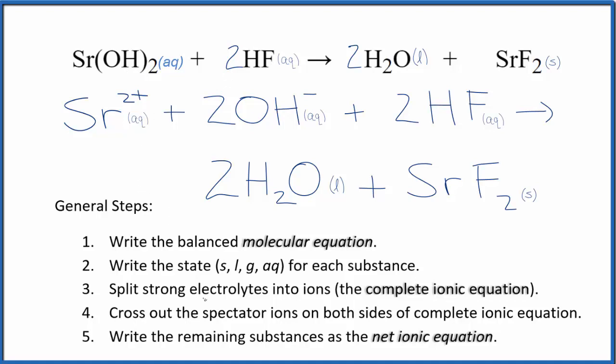Now we can cross out spectator ions, which appear on both sides. But as I look at it, it's different. Both sides are different. There's nothing that's the same. So there aren't any spectator ions, so I can't cross those out. So this is our complete ionic equation.